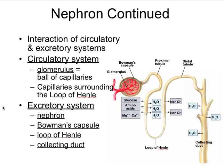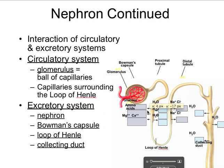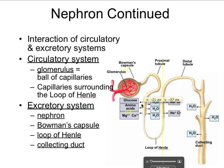There are interactions and exchanges between the circulatory system and the excretory system — first in the glomerulus, that ball of capillaries inside the Bowman's capsule, and then also in capillaries surrounding the loop of Henle.